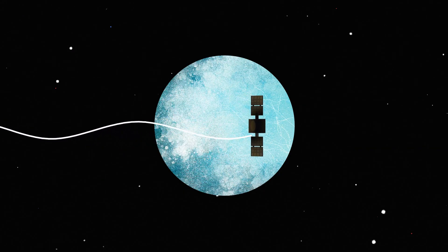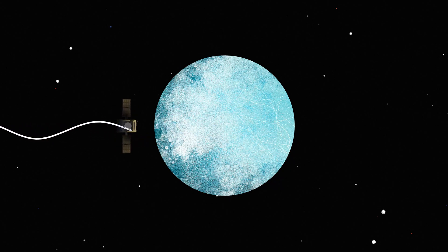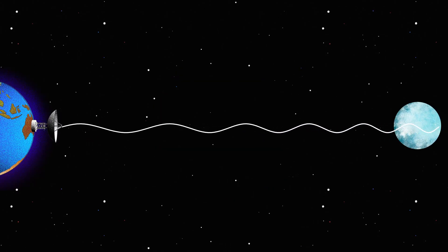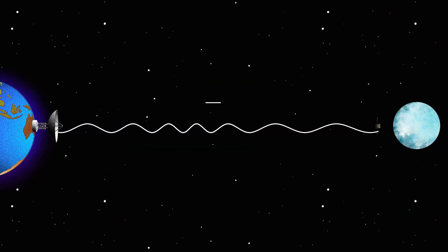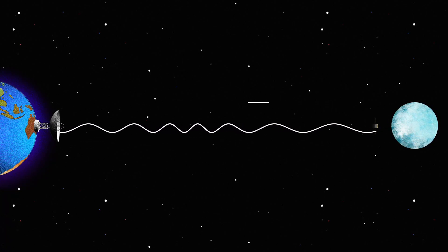Every spacecraft travels in a predetermined path, emitting radio signals as it orbits around its target. Scientists and engineers can infer the spacecraft's location and how fast it's going by measuring changes in the spacecraft's radio signal frequency.